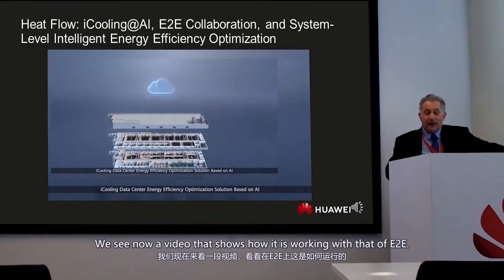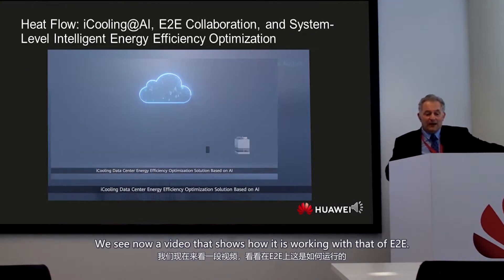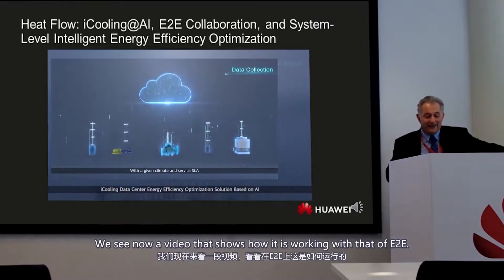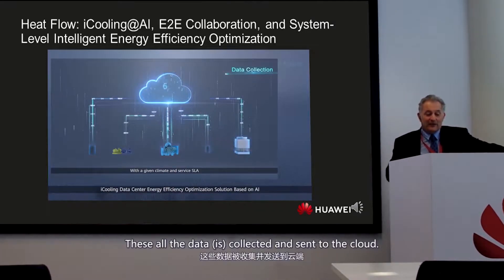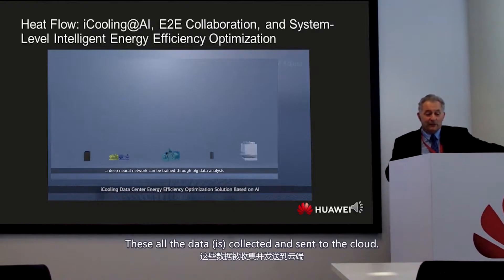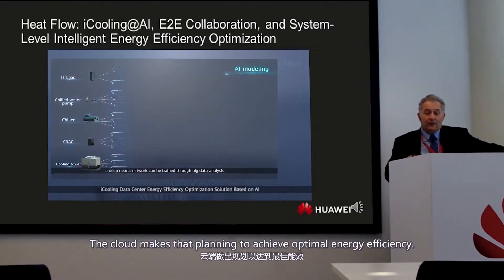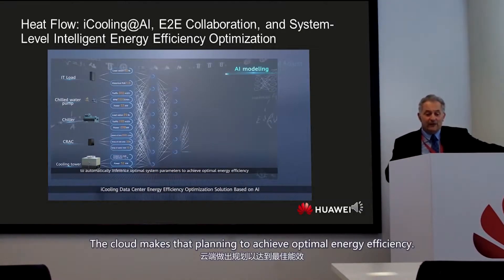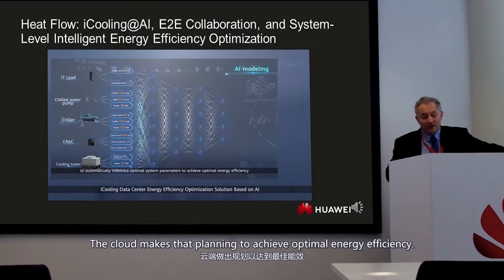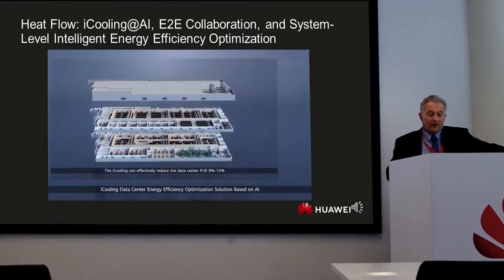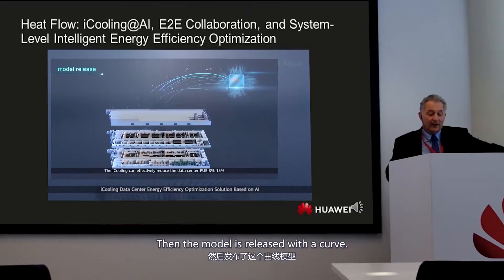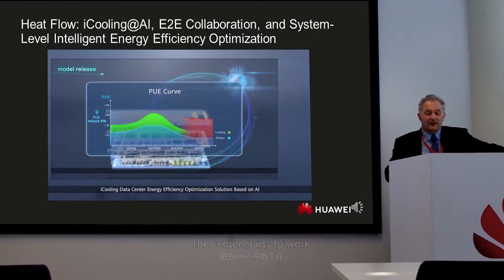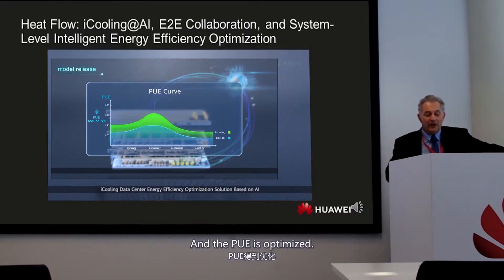We can now see a video showing how this AI cooling system works in more detail. All data is collected and sent to the cloud. The cloud performs AI modeling to define the algorithm, which is then deployed to the local data center to start optimizing, and PUE is continuously improved.